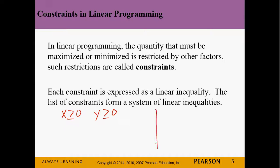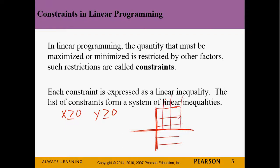If we're looking at x greater than zero and y greater than zero, these are the lines x = 0 and y = 0. One goes in this direction, one goes in this direction. What has both of them positive? Just quadrant one. So automatically we know we're going to be in quadrant one.